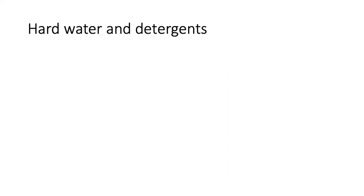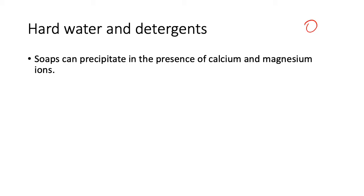Soaps can precipitate in the presence of calcium and magnesium ions. Remember, soaps are salts—they have a polar head and a non-polar tail. Normally we have them with sodium ions.